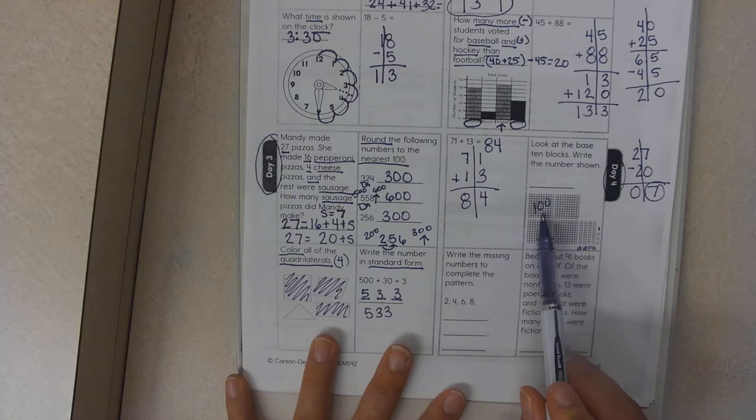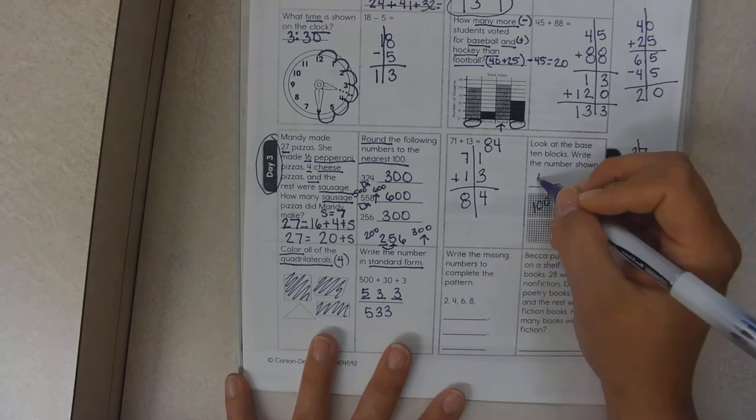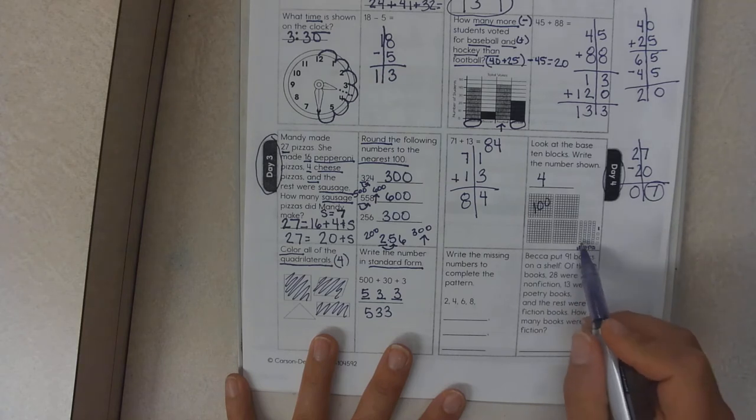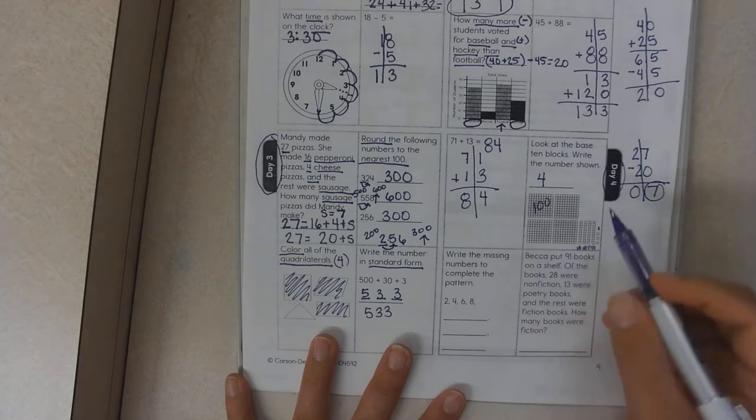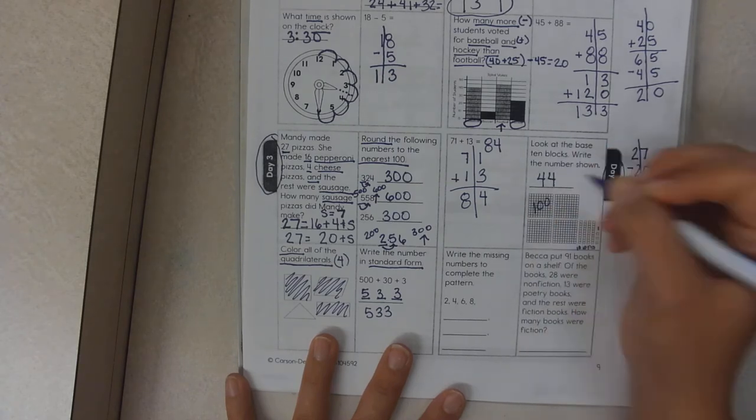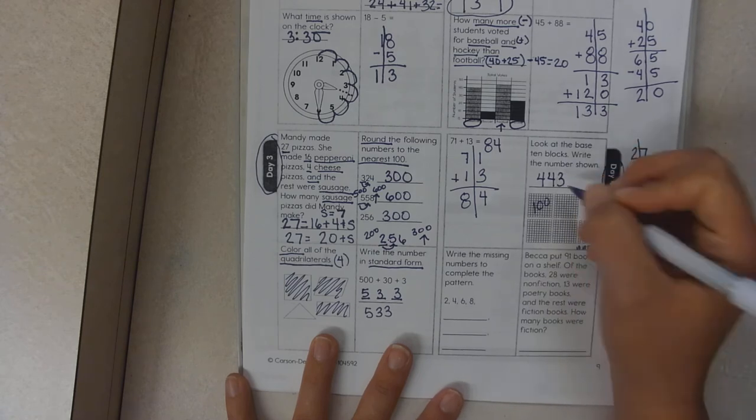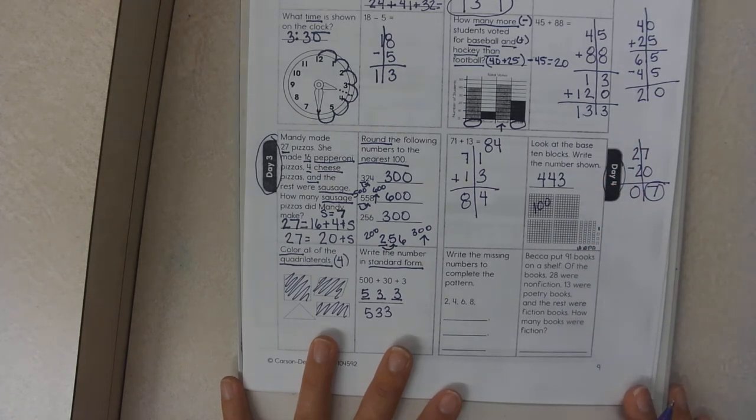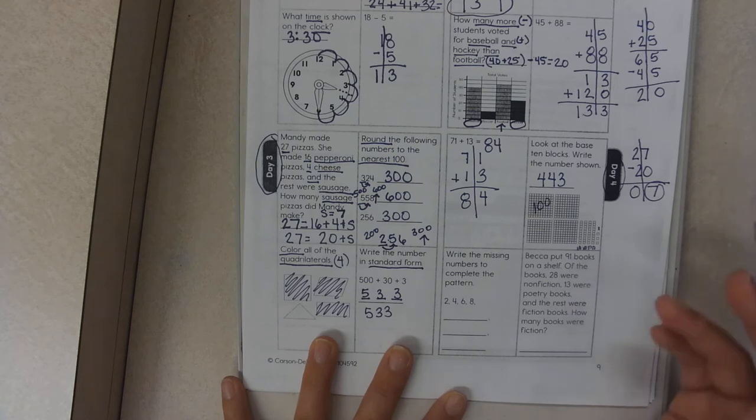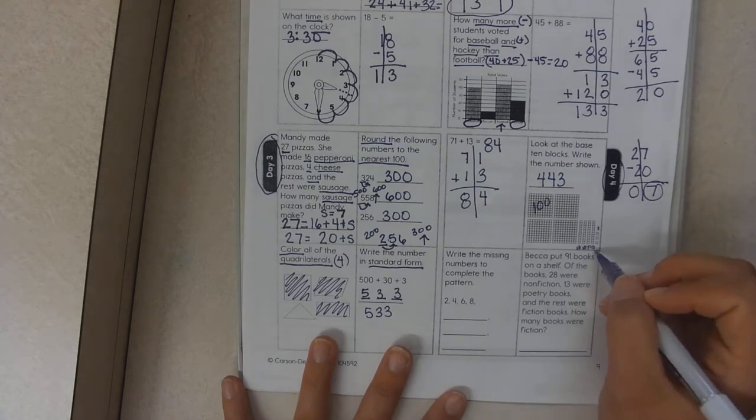So if I were to count: 100, 200, 300, 400. So I have four hundreds. Ten, twenty, thirty, forty. One, two, three. Now the way I did that was actually incorrect and the reason why is because you should start with your ones place.